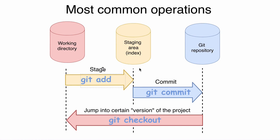It is also possible to move files from the working directory to the git repository with a single git commit command, which we will use later on. But under the hood, files will still be moved through the staging area. When files are committed and you have more than one commit in your project, you can jump between different versions of your project.